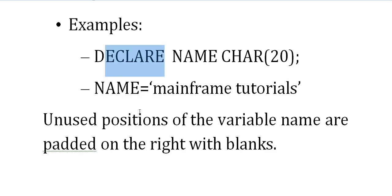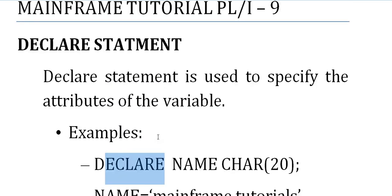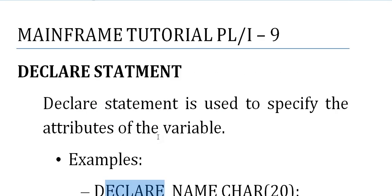Unused positions of the variable name are padded on the right with blanks for character types. For example, if you declare 40 bytes but are not using all of the provided space, the unused positions of the variable are padded on the right side with blanks. This concludes the overview of DECLARE statements.